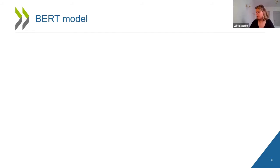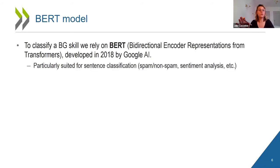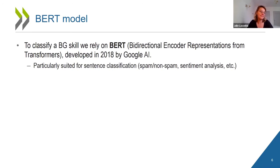To perform the classification exercise, we use an algorithm called BERT, developed by researchers at Google AI. It is still considered a frontier in the field of natural language processing and has been shown to perform particularly well for sentence classification tasks — for example, classifying text as spam or non-spam, or conducting sentiment analysis.